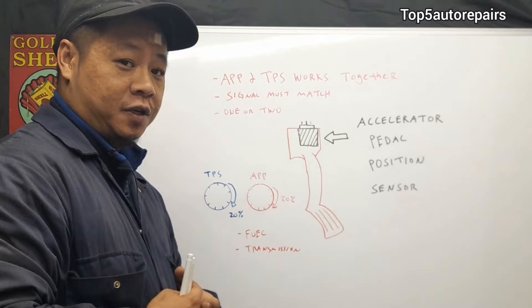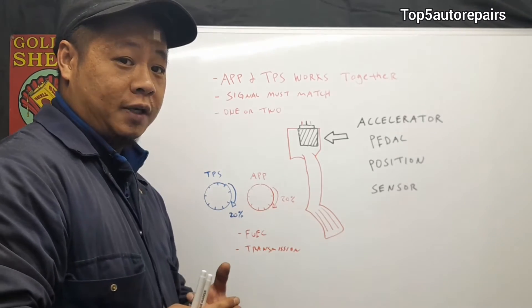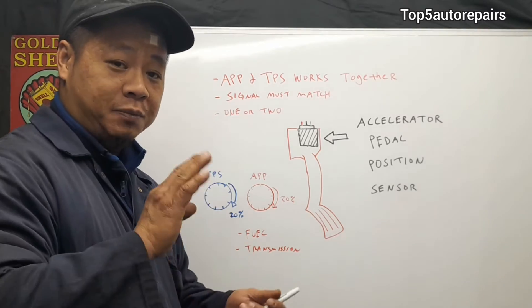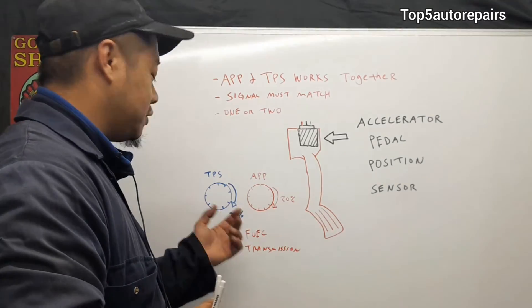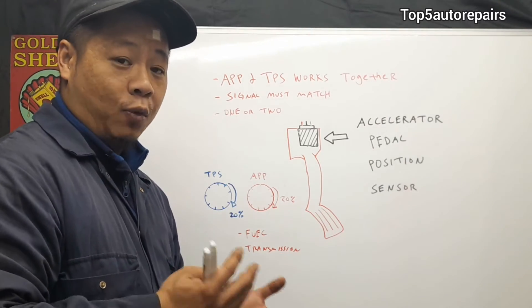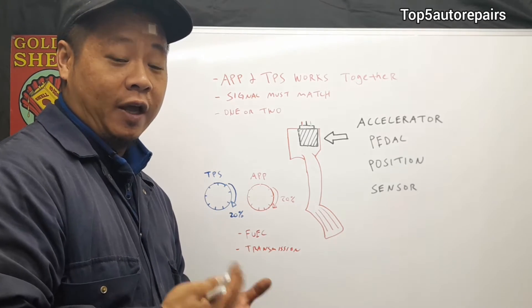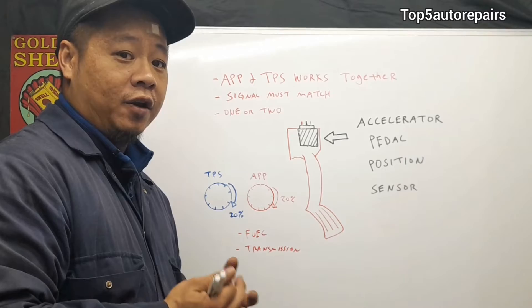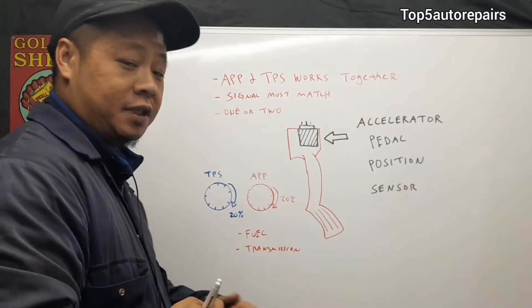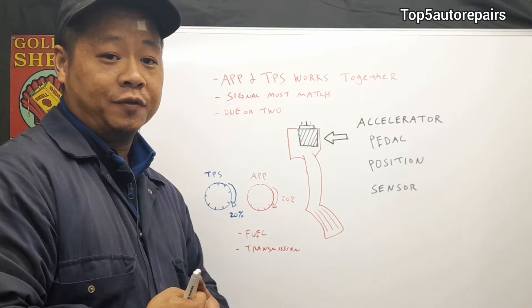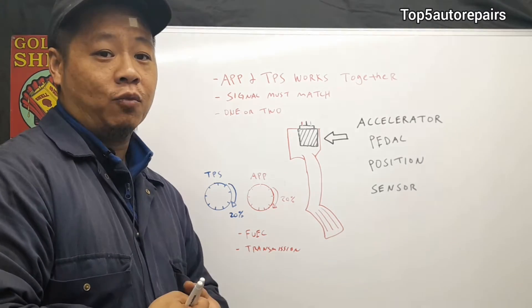The APP sensor's main purpose is to provide the computer how much the gas pedal is being pressed, and it works together with the TPS sensor. By working together you can achieve better gas mileage because it's computer controlled. It also helps improve the transmission shift points, improving fuel economy and making everything run more efficient.